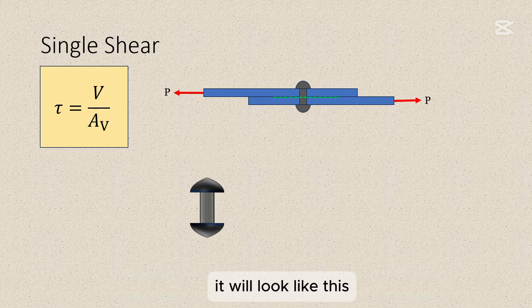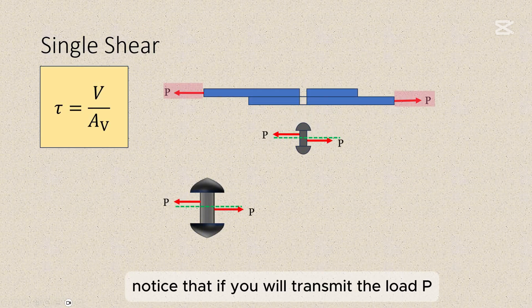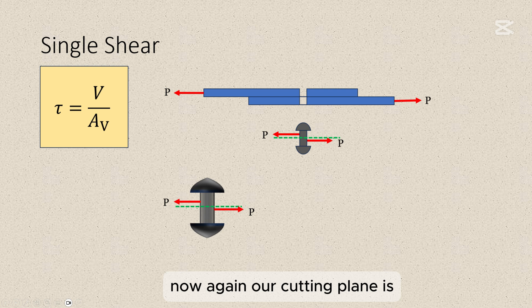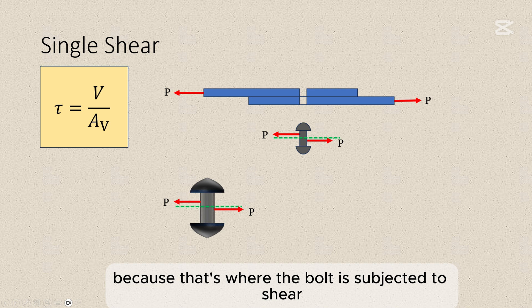It will look like this. Notice that if you transmit the load P, they will be acting here. This is for P right here and this one is from here. Now again, our cutting plane is at the junction point of the two plates, because that's where the bolt is subjected to shear.